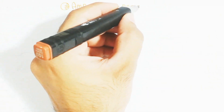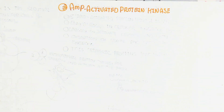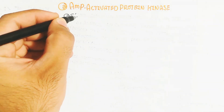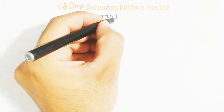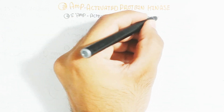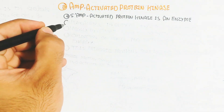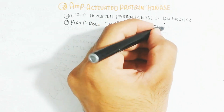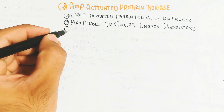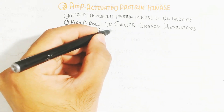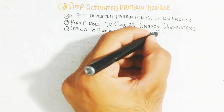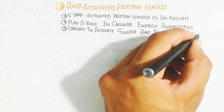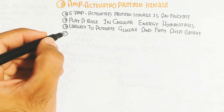In this video we will understand about the AMPK pathway — the AMP-activated protein kinase. The five-prime AMP-activated protein kinase is an enzyme that plays a role in cellular energy homeostasis, largely activating glucose and fatty acid uptake as well as oxidation of glucose and fatty acid when energy is low, such as during the fasting state.